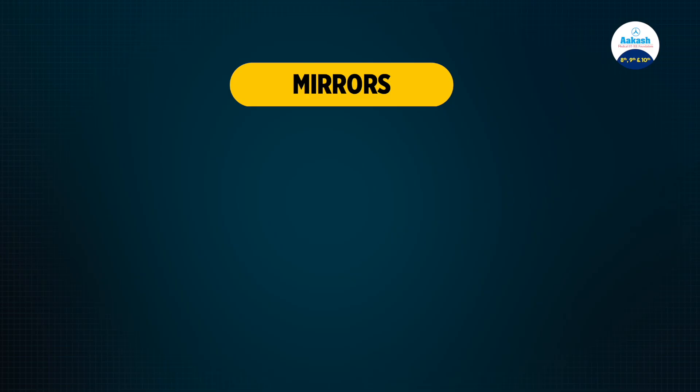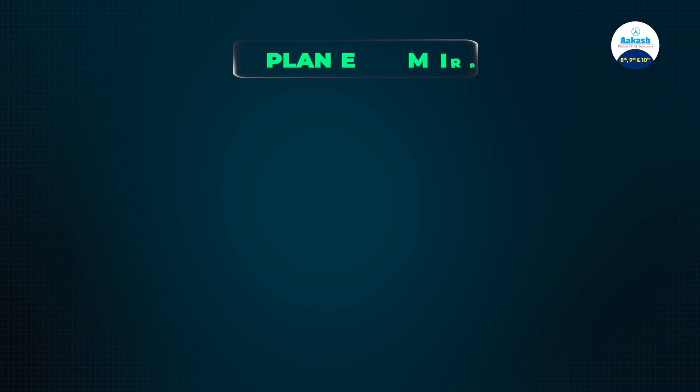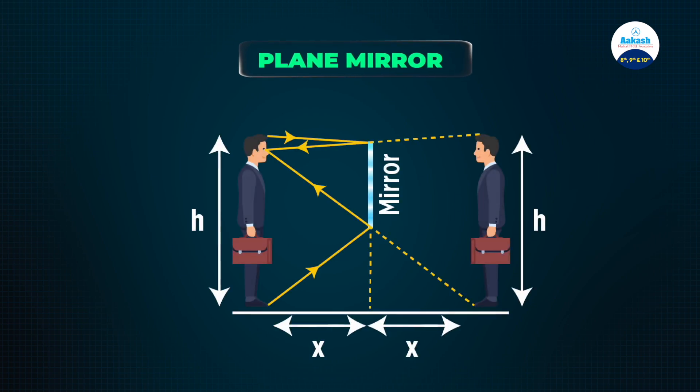Now let's look at mirrors. There are generally two types: plain mirrors and spherical mirrors. A plain mirror creates a virtual and erect image. The image formed from a plain mirror is of the same size, laterally inverted, and is at the same distance behind the mirror as the object is in front of it.